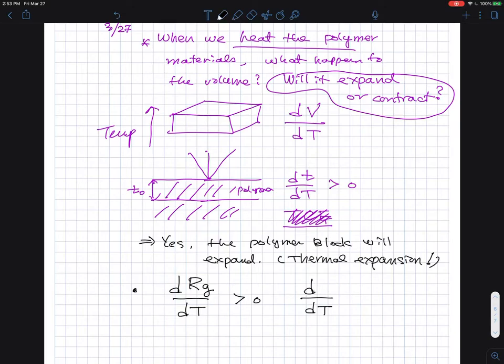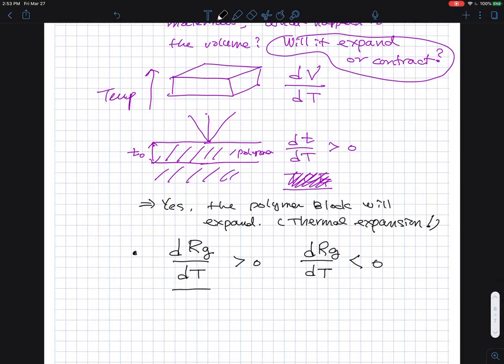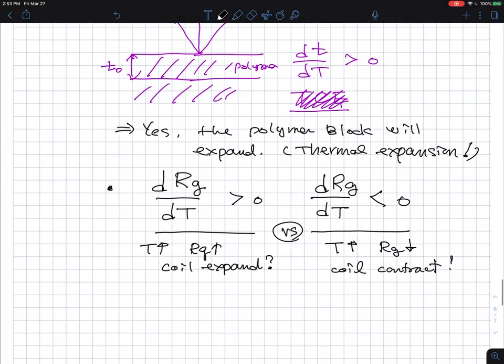And people actually measure that. They heat up the polymer chain. And if I use this, that means radius of temperature goes up, the radius of gyration goes up. That means coil will expand. When this is true, if temperature when it goes up, actually the radius of gyration goes down and coil contract. What do you think?